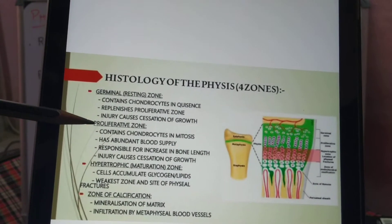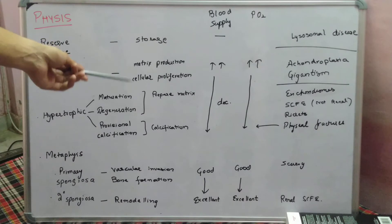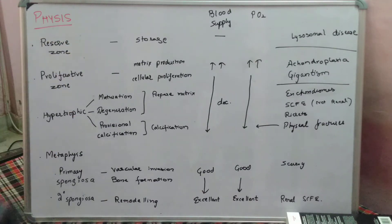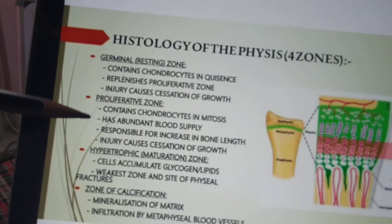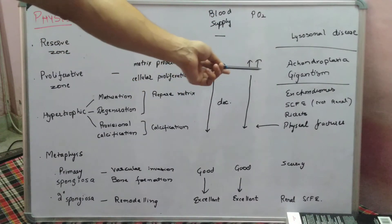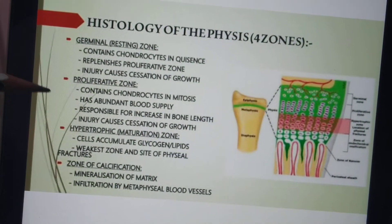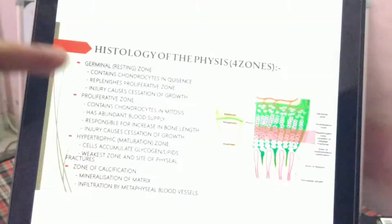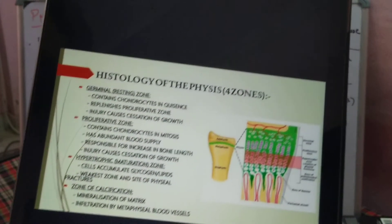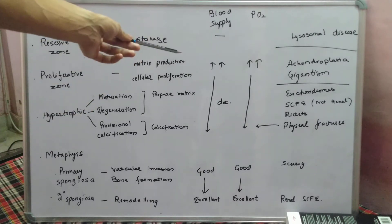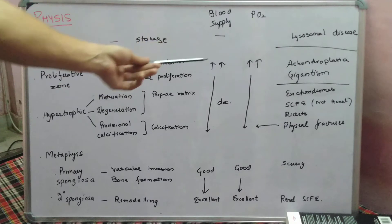The second zone is the proliferative zone, where chondrocytes are in division — mitosis. Matrix and cellular proliferation occur here; chondrocytes keep dividing and produce matrix and more chondrocytes. It has abundant blood supply and increased oxygen tension. This zone is responsible for the increase in bone length. Injury in this zone also causes cessation of growth.